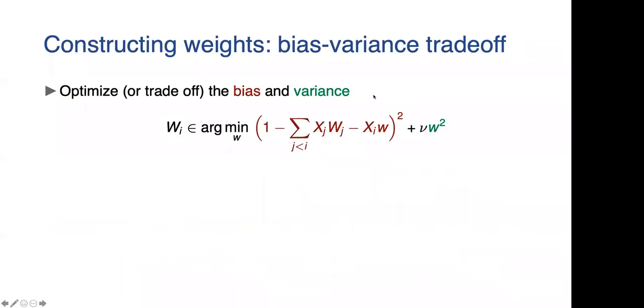You can think of many ways of constructing the weights subject to the desiderata that I mentioned. What we do in the paper is simply something that optimizes bias and variance. Think that you've chosen all of the weights up to time i minus one. You choose the ith weight to trade off the bias and variance. This is the equation in dimension one. In higher dimensions, it's not particularly hard to generalize this.